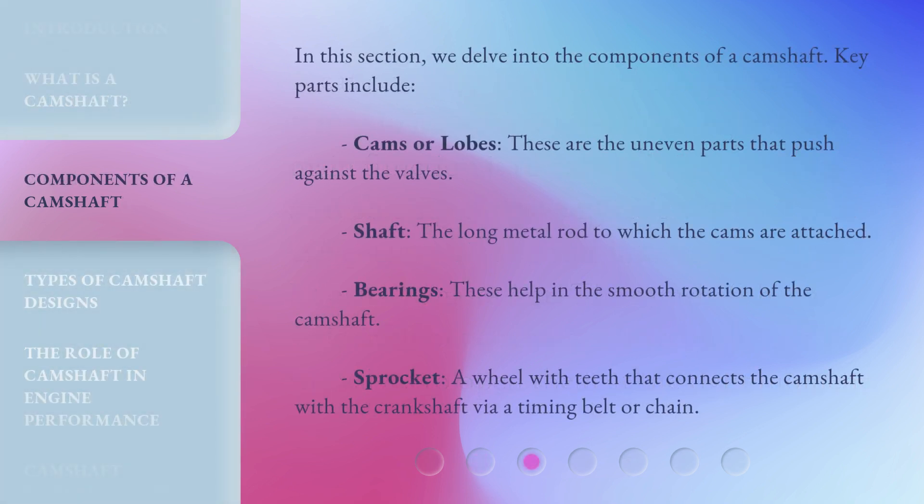In this section, we delve into the components of a camshaft. Key parts include: cams or lobes — these are the uneven parts that push against the valves; the shaft — the long metal rod to which the cams are attached; bearings — these help in the smooth rotation of the camshaft; and the sprocket — a wheel with teeth that connects the camshaft with the crankshaft via a timing belt or chain.